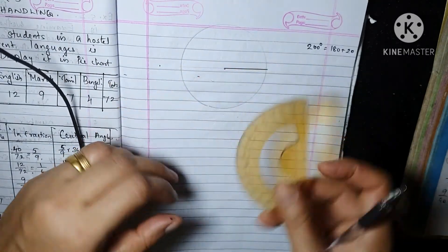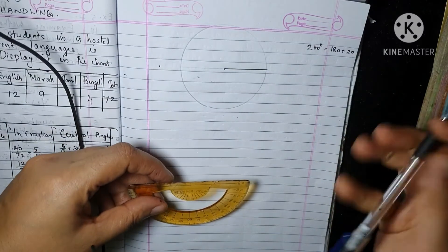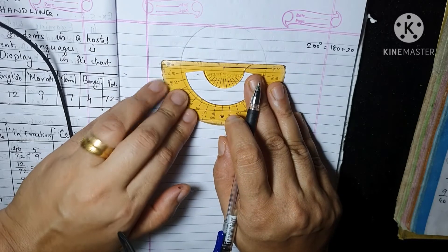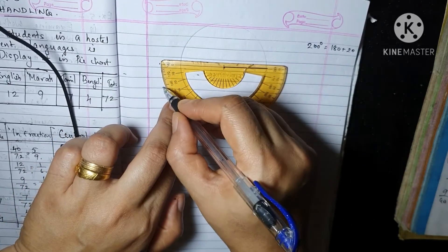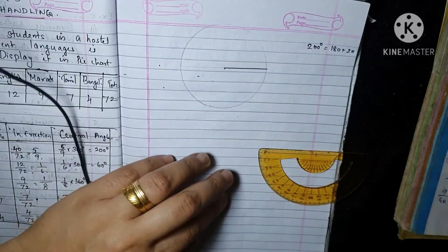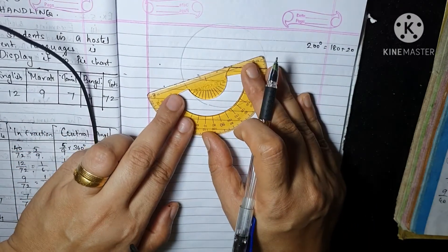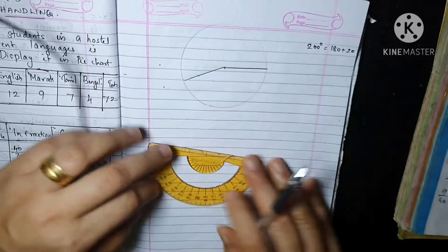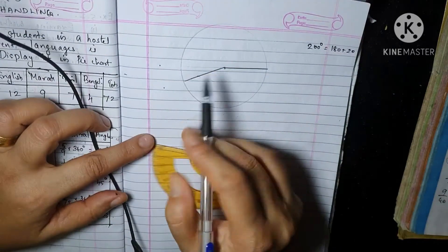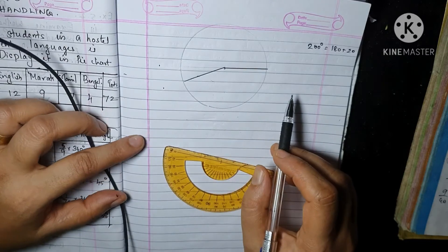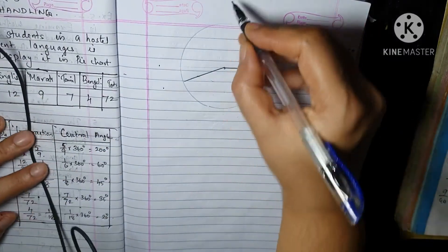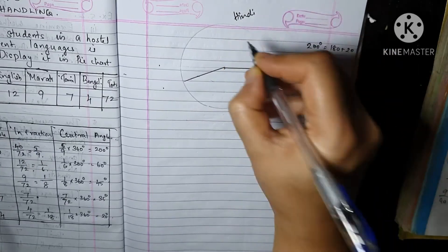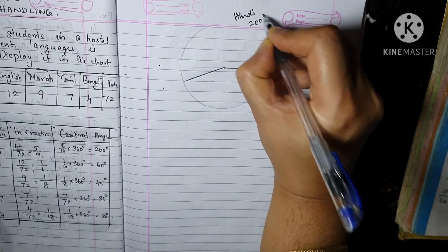The next is 20. Put 20 here, then put a mark on the whole line. Draw the line slowly. This is the center angle — the center angle is 200 degrees.